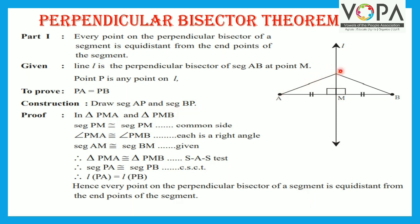Segment AP and segment BP are drawn. Now, in triangle PMA and triangle PMB: segment PM is congruent to segment PM, which is a common side. Angle PMA is congruent to angle PMB, each of 90 degrees. And segment AM is congruent to segment BM, which is given. Therefore, triangle PMA is congruent to triangle PMB by the SAA test.